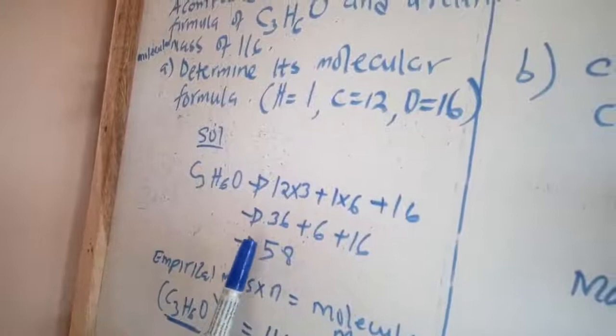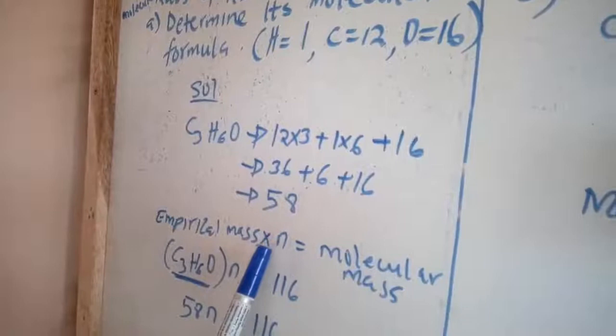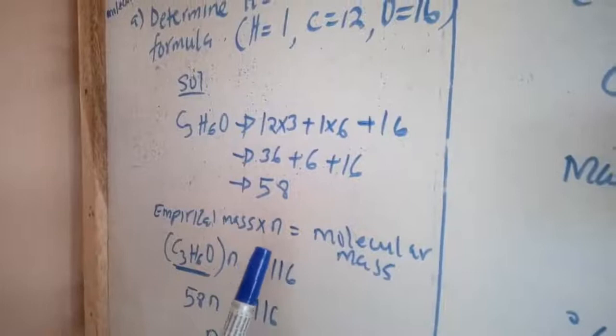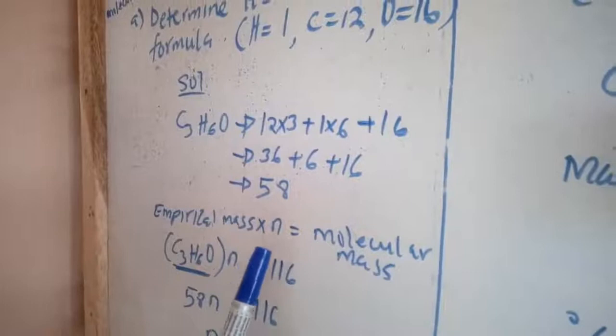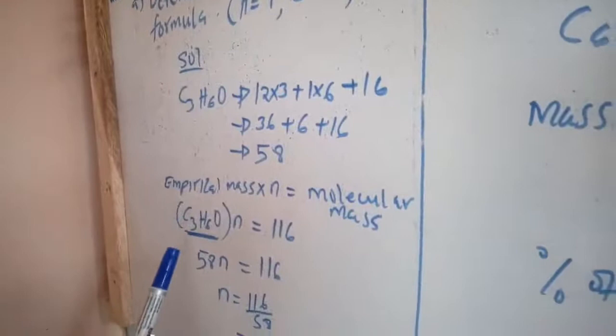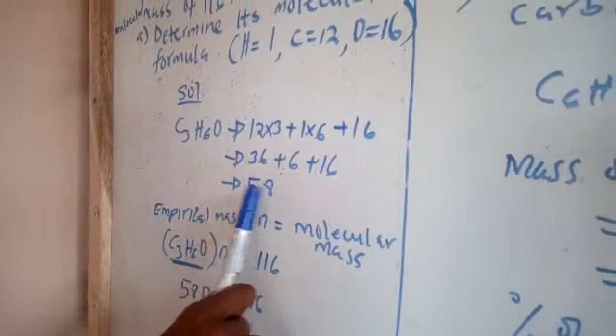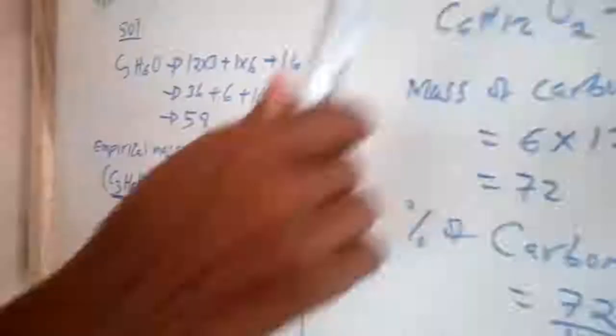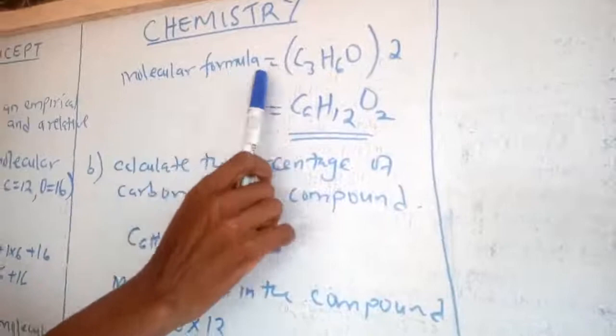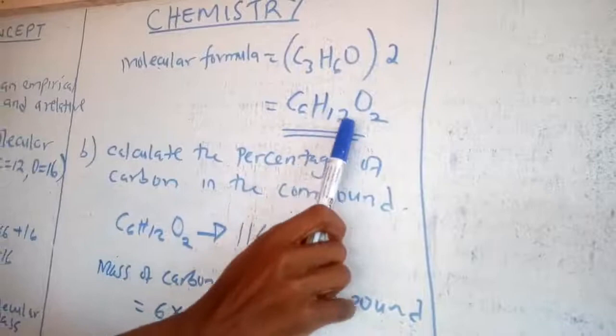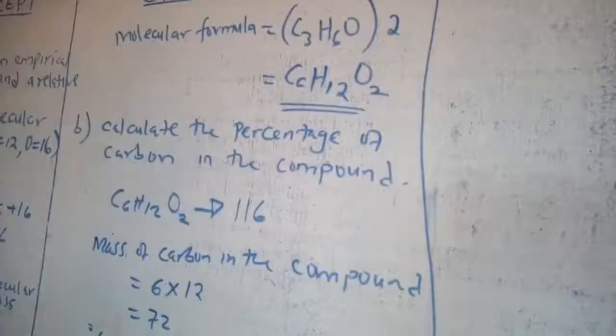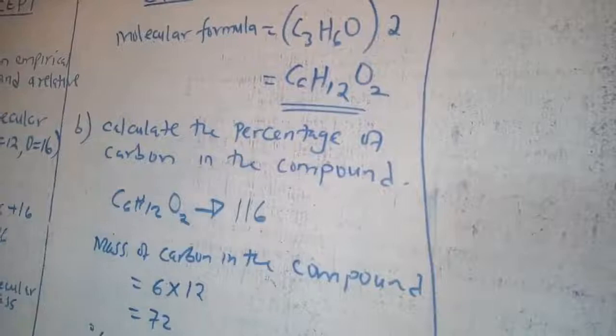After getting the empirical mass of 58, you equate: empirical mass × N = molar mass, so 58 × N = 116, giving N=2. Substituting back: 3×2=6 carbons, 6×2=12 hydrogens, and 1×2=2 oxygens. The molecular formula is C6H12O2.